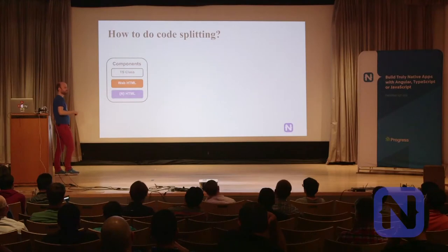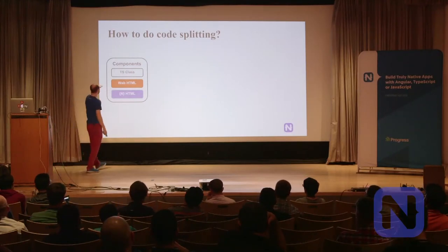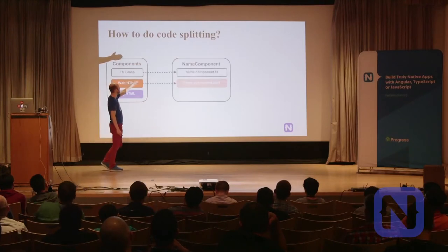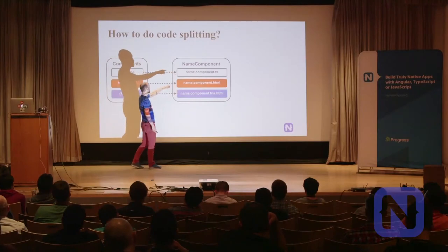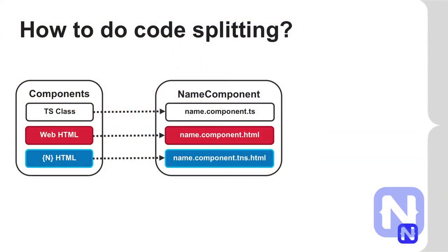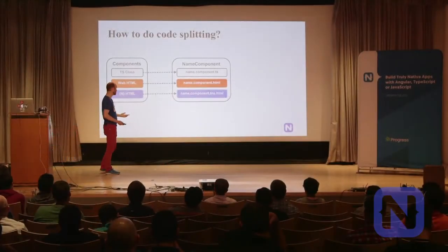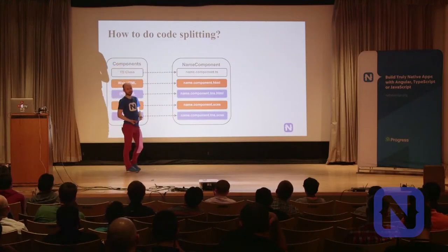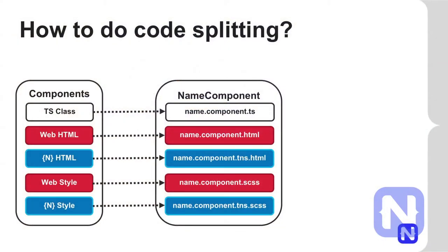How do we do code splitting in this monorepo? For a component, you have the TypeScript class file and two HTML files: name.component.html and name.component.tns.html — the .tns suffix specifies it's a NativeScript file. For styling, you have name.component.scss and name.component.tns.scss. You could even have name.component.tns.ts if you don't want to share the TypeScript either — so one component could have nothing shared except the name. It's up to you to choose.